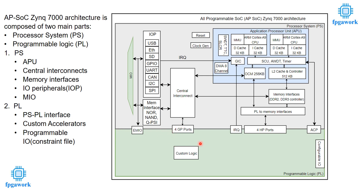The next part is PL (Programmable Logic). PL is simply an FPGA, so any kind of hardware or customized accelerator logic can be implemented here. In many applications we need a hybrid system — meaning we have customized hardware in PL that needs to communicate with PS. There are different interfaces that can be exploited to make this communication between the customized accelerator and PS.